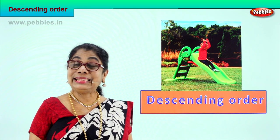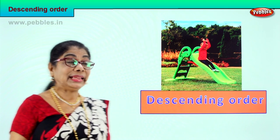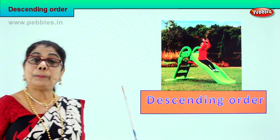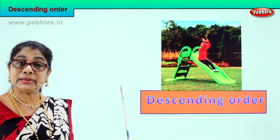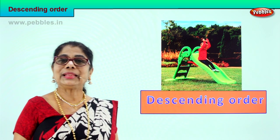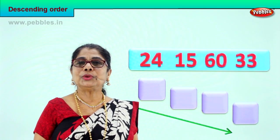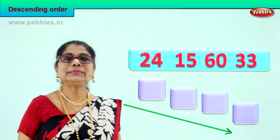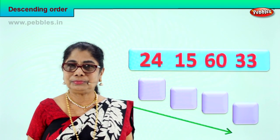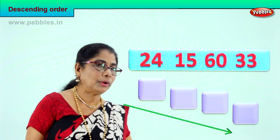We are learning to put the numbers that I give you in descending order. What is the meaning of descent? You should pick the biggest first and the next smaller, small and go on. Descent means bigger, bigger, smaller, smaller, smaller.